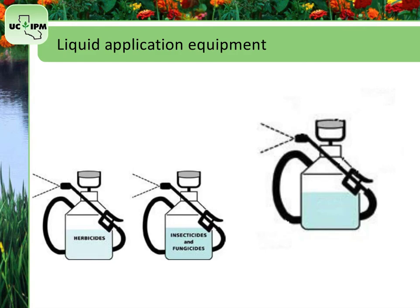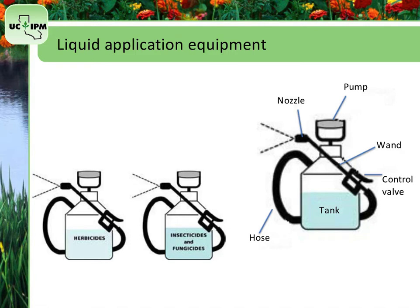Liquid application equipment usually consists of a tank for mixing and holding the pesticide, a system of pipes or hoses that move a pesticide from the tank to the nozzle, a pump that creates pressure to move the liquid, one or more nozzles that break the spray into droplets, and on some equipment, a wand that aims the nozzle at the target. Larger applicators may have pressure regulators, fans, filter screens, control valves, booms, agitators, or other devices to improve pesticide mixing and application.